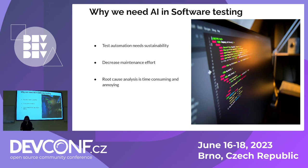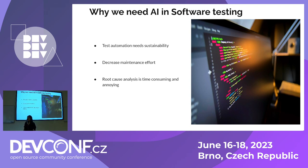After doing some research, I found a survey which tells us that 75% of test automation scripts are failing due to either bad locator strategy or locator change. So this is the problem I identified. Let's move to the solution, but before that, let's talk a little more about the problem.